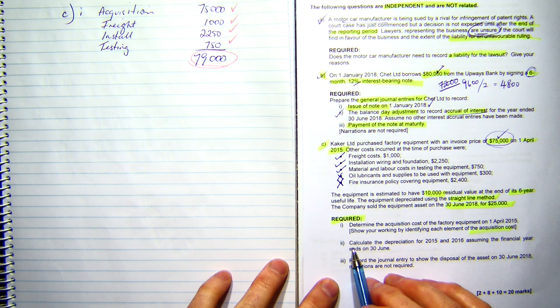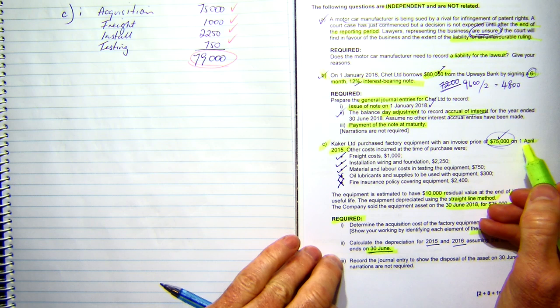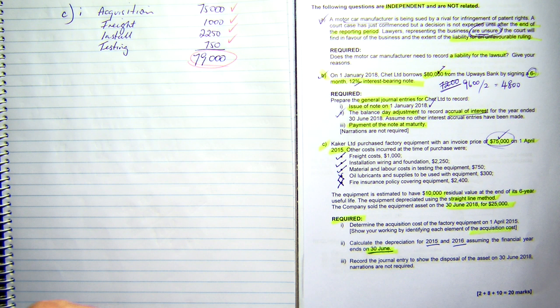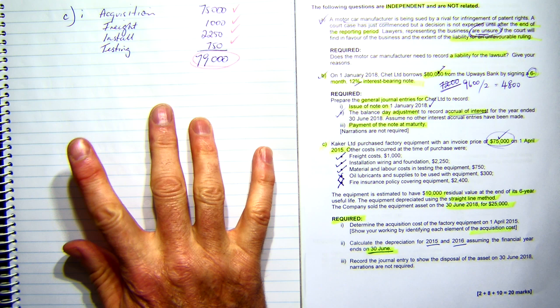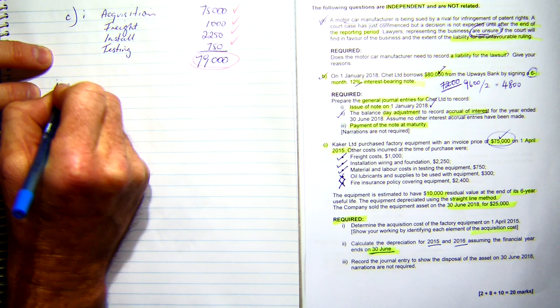Next part is part two. Calculate the depreciation of 2015 and 2016, assuming the financial year ends on the 30th of June. Now, remember I said dates are important. When did we acquire the equipment? On the 1st of April 2015. So we've got April, May, June. We've got three months worth of depreciation in 2015 and 12 months of depreciation in 2016. First things first, we need to calculate depreciation.